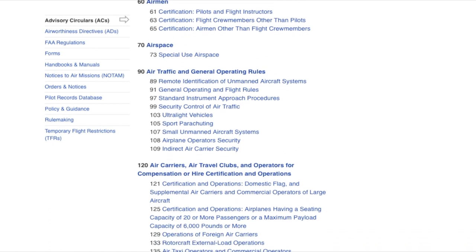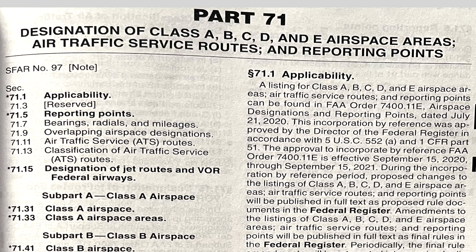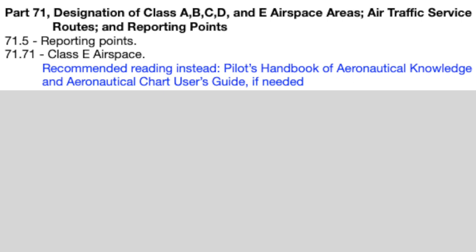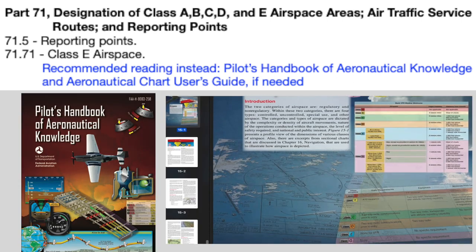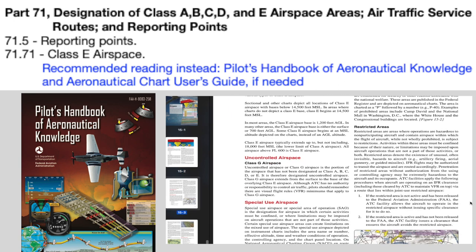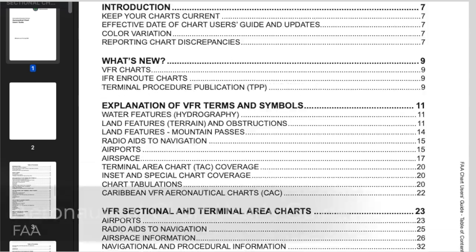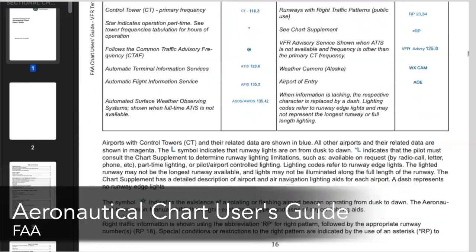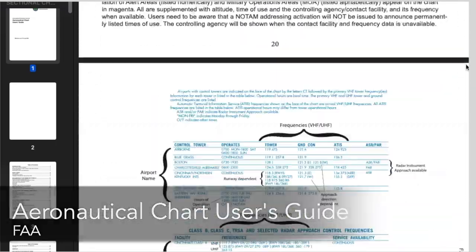Back to the study list — we are now at part 71, designation of class A, B, C, D, E, F, G airspace, air traffic service routes, and reporting points. Basically all those invisible property lines that sit up in the sky. For this topic I personally prefer using the Pilot's Handbook of Aeronautical Knowledge for its visuals. If you're looking for a review on aeronautical charts and their symbology, I really like referring to the FAA's Aeronautical Chart User's Guide — it has everything you could wish for regarding aeronautical charts.